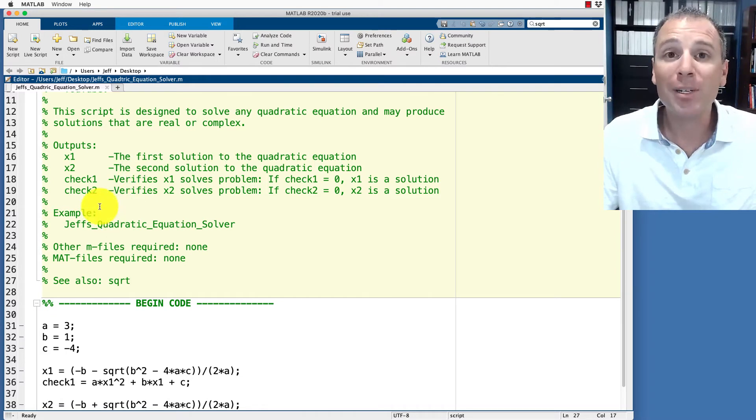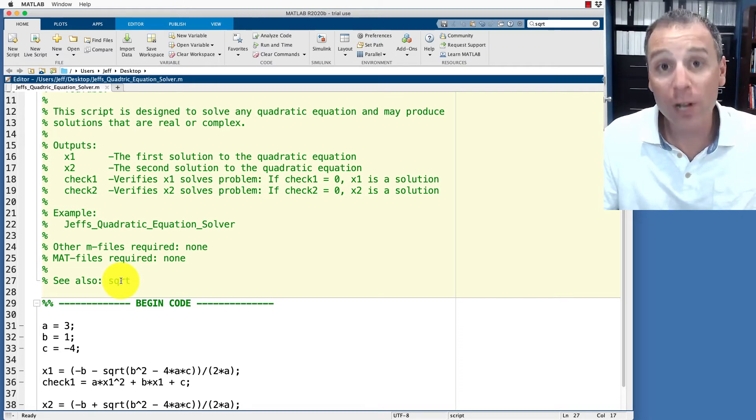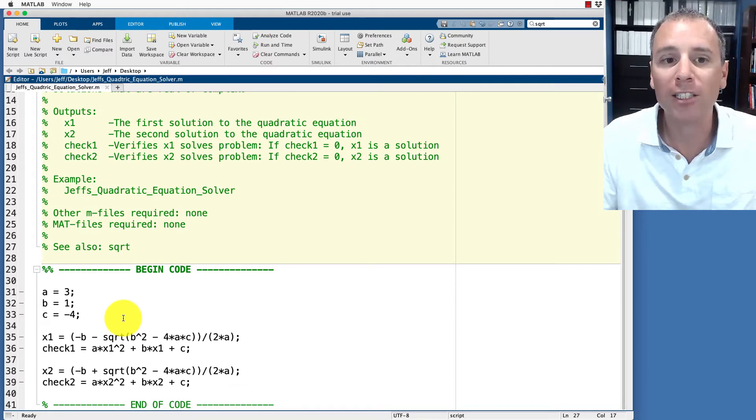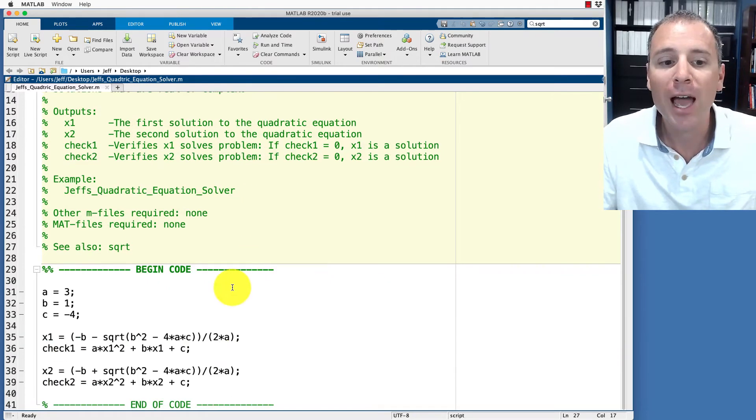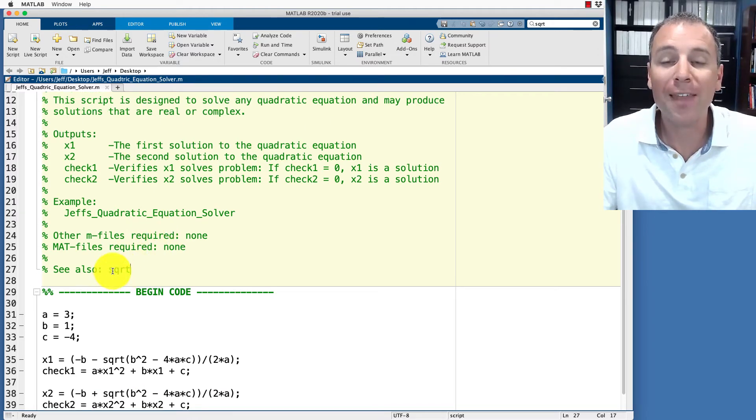The last line of the help documentation that we're going to include is called see also. This will include references to any other information that my readers of this code might want to check out in order to understand what this code actually does. In this case we've said that this script is designed to solve any quadratic equation including real and complex variables. I'm going to highlight the square root function because square root allows real and complex roots. Thus users might want to identify that the square root is where that functionality comes from.